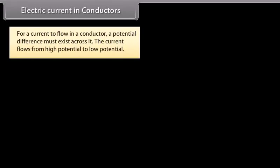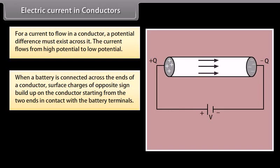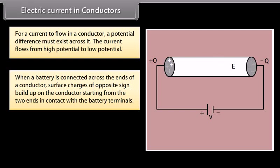Electric current in conductors: for a current to flow in a conductor, a potential difference must exist across it. The current flows from high potential to low potential. When a battery is connected across the ends of a conductor, surface charges of opposite sign build up on the conductor, starting from the two ends in contact with the battery terminals.